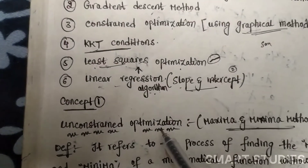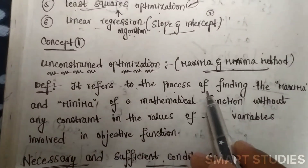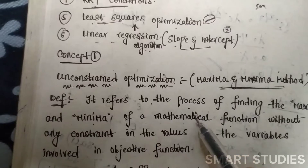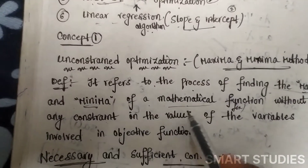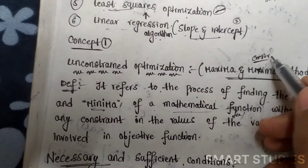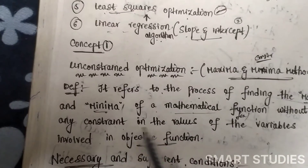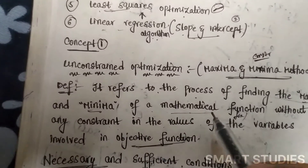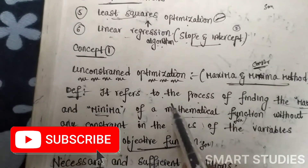Coming to the first concept, that is unconstrained optimization — the maxima-minima method. The definition is: it refers to the process of finding the maximum and minimum of a mathematical function f(x), in which we find the maximum and minimum value without any constraint. In the maxima-minima method, there are no constraints; we only have the objective function. Without any constraint, we optimize the value of the variables involved in the objective function.